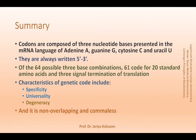To summarize: codons are composed of three nucleotide bases, written from the 5' towards the 3' end. 61 codons code for 20 standard amino acids and there are three termination codons. The genetic code is specific, universal, and degenerate. It is also non-overlapping and comma-less.